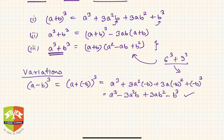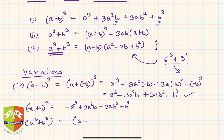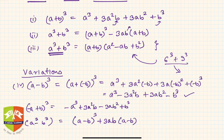Similarly, for (−a + b)³, wherever the power of a is odd you change that sign, giving −a³ + 3a²b − 3ab² + b³. For the fifth identity, a³ − b³: replace b with −b in the a³ + b³ identity — wherever the power of b is odd change the sign — giving a³ − b³ = (a − b)³ + 3ab(a − b).